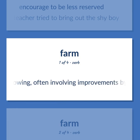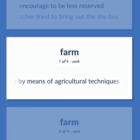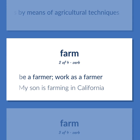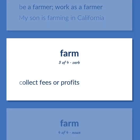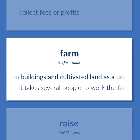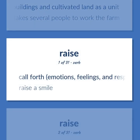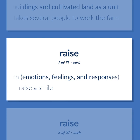Farm: Cultivate by growing, often involving improvements by means of agricultural techniques. Be a farmer, work as a farmer — my son is farming in California. Collect fees or profits. Workplace consisting of farm buildings and cultivated land as a unit — it takes several people to work the farm. Raise: Call forth emotions, feelings, and responses — raise a smile.